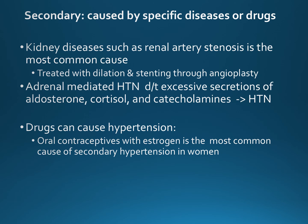Secondary hypertension is caused by either a disease process or a medication. The most common disease process is renal artery stenosis, which is treatable with dilation and stenting of the stenosed artery through an angioplasty. There is also adrenal-mediated hypertension caused by excessive secretions of aldosterone, cortisol, and catecholamines. The main drug that can cause hypertension is oral contraceptives containing estrogen, which is the most common cause of secondary hypertension in women.